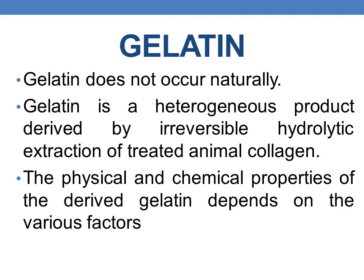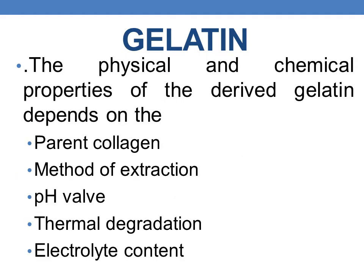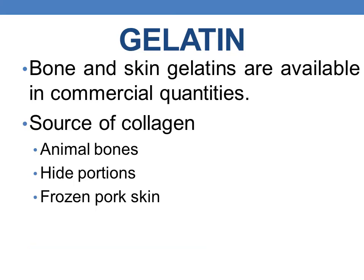The physical and chemical properties of the derived gelatin depend on various factors, such as the source of parent collagen, the manner of extraction, pH value, thermal degradation, and the electrolyte content. Commercially, bone and skin gelatin are available. The major source of collagen is either animal bones, hide portions, or frozen pork skin.